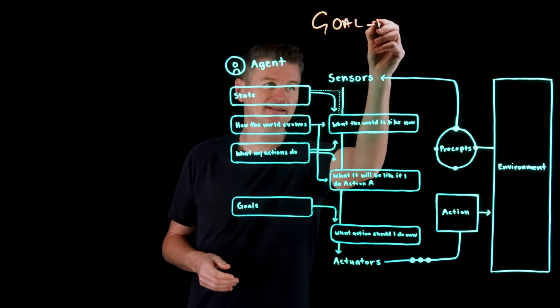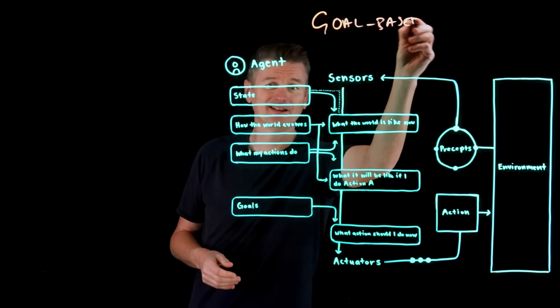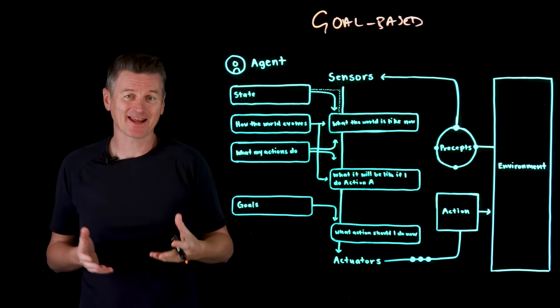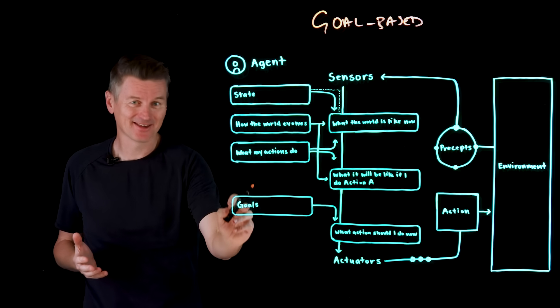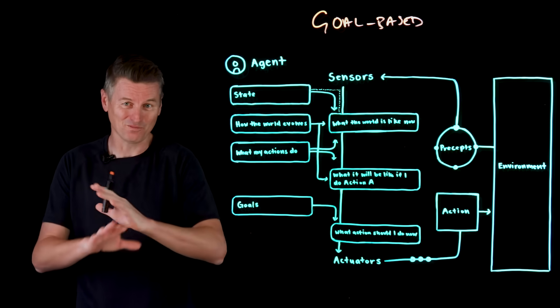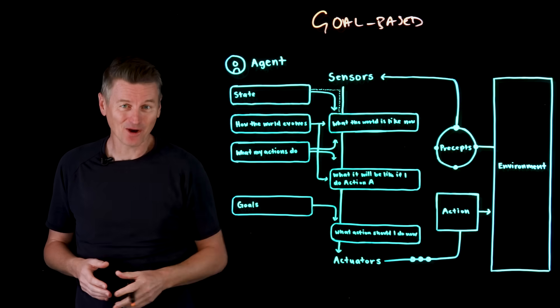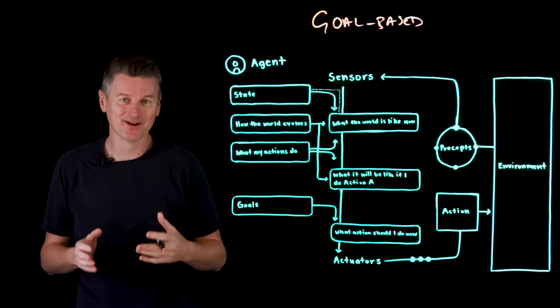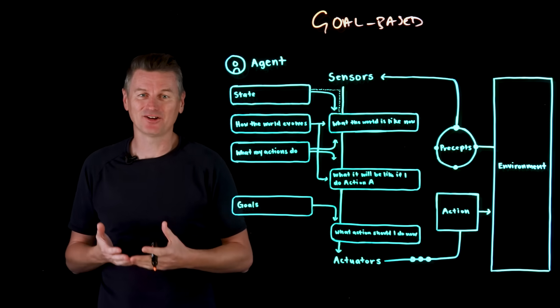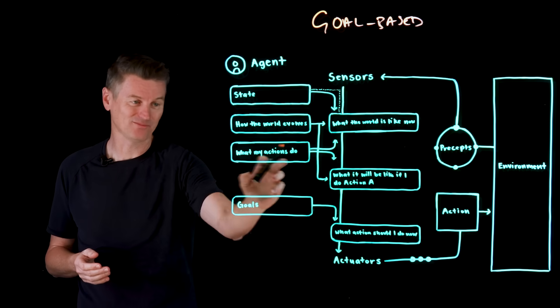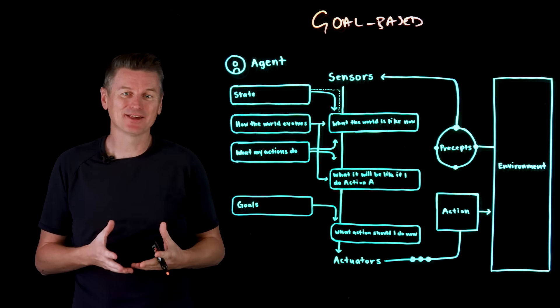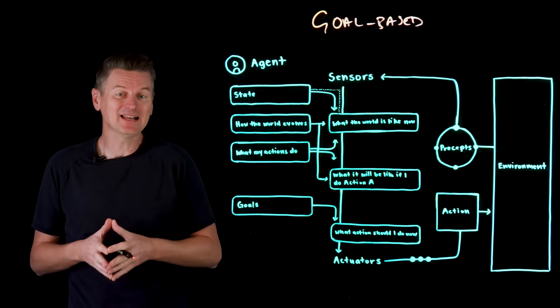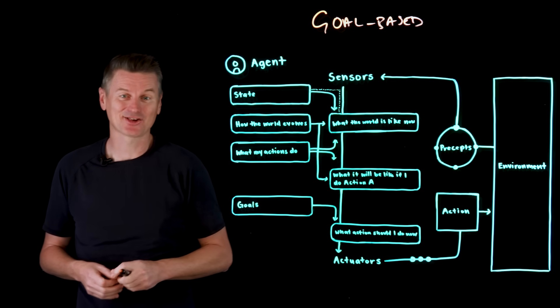A goal-based AI model is building on top of the model-based agent by adding decision-making that's based on goals. So we don't have condition action rules anymore. We have goals. And they represent the desired output the agent is trying to achieve. So the agent uses its internal model, that's how the world evolves and what my actions do, to simulate future outcomes of possible actions, essentially predicting what will it be like if I do action A.